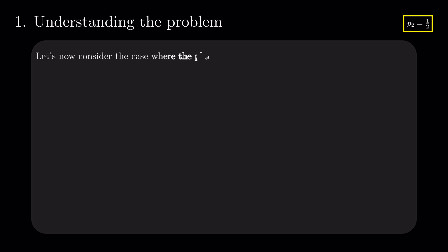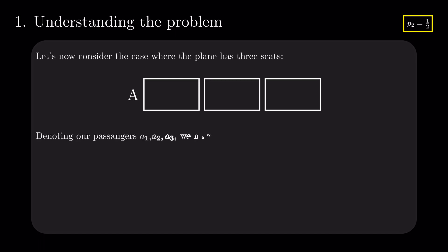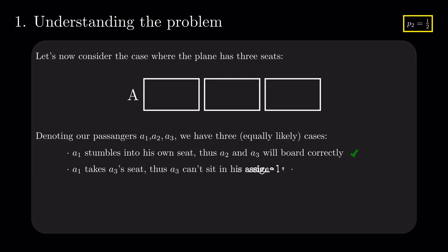Let's now consider the case where the plane has three seats. Denoting our passengers in order A1, A2, and A3, we have three equally likely possibilities. A1 stumbles into his seat, leaving A2 and A3 free to board correctly. A1 takes A3's seat, thus A3 cannot sit in his assigned position. Or, A1 takes A2's seat, so A2 will pick a random seat from the remaining two.